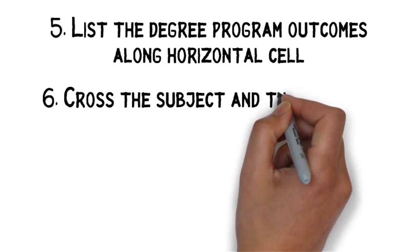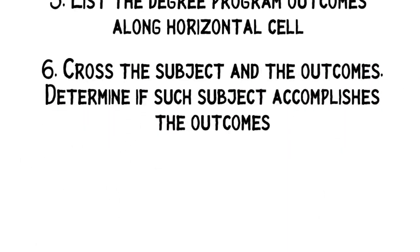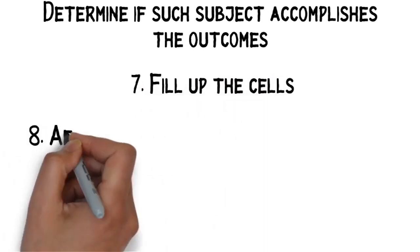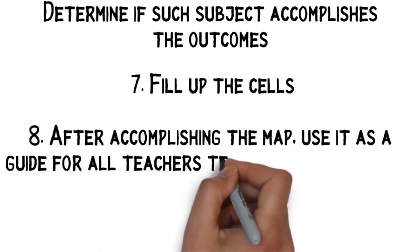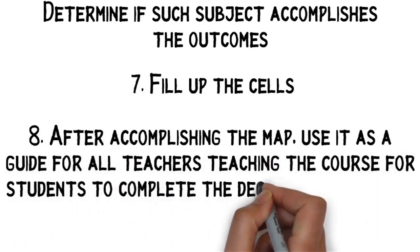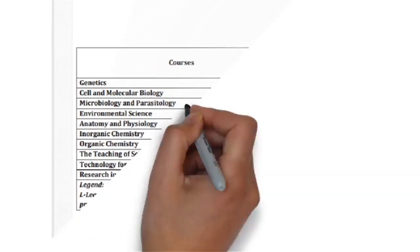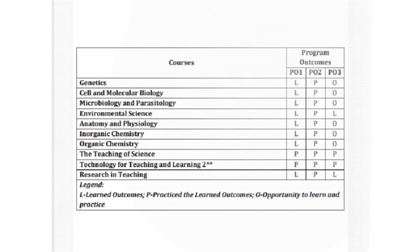6. Cross the subject and the outcomes. Determine if such subjects accomplishes the outcomes. 7. Fill up the cells. 8. After accomplishing the map, use it as a guide for all teachers teaching the course for students to complete the degree in 4 years. 9. This matrix below shows a general curriculum map for the Bachelor of Secondary Education, major in Science, using sample subjects only.